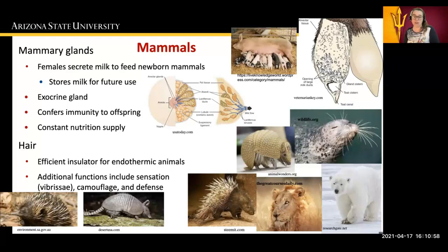Additional functions of hair include sensation. The vibrissae are the little whiskers that you see on sea lions and walruses. They also use them for camouflage, like how the lion blends in to his background on the savannah. And finally, they can be used for defense — you can see the skunk and the porcupine or the echidna. These all exhibit defense quills or modified hair.